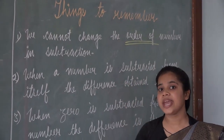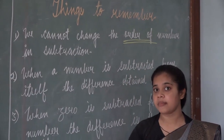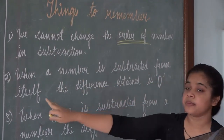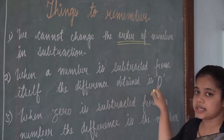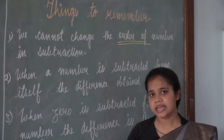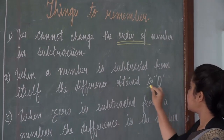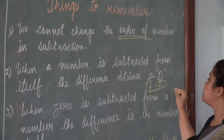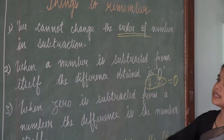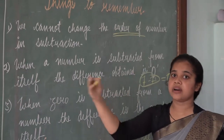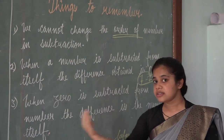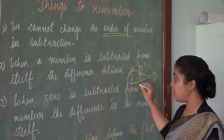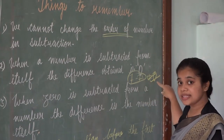This is because we have to subtract the smaller number from the greater one. When a number is subtracted from itself, the difference obtained is 0. For example, 7 minus 7, or 500 minus 500, or 2,220 minus 2,220 — when a number is subtracted from itself, the result is always 0.